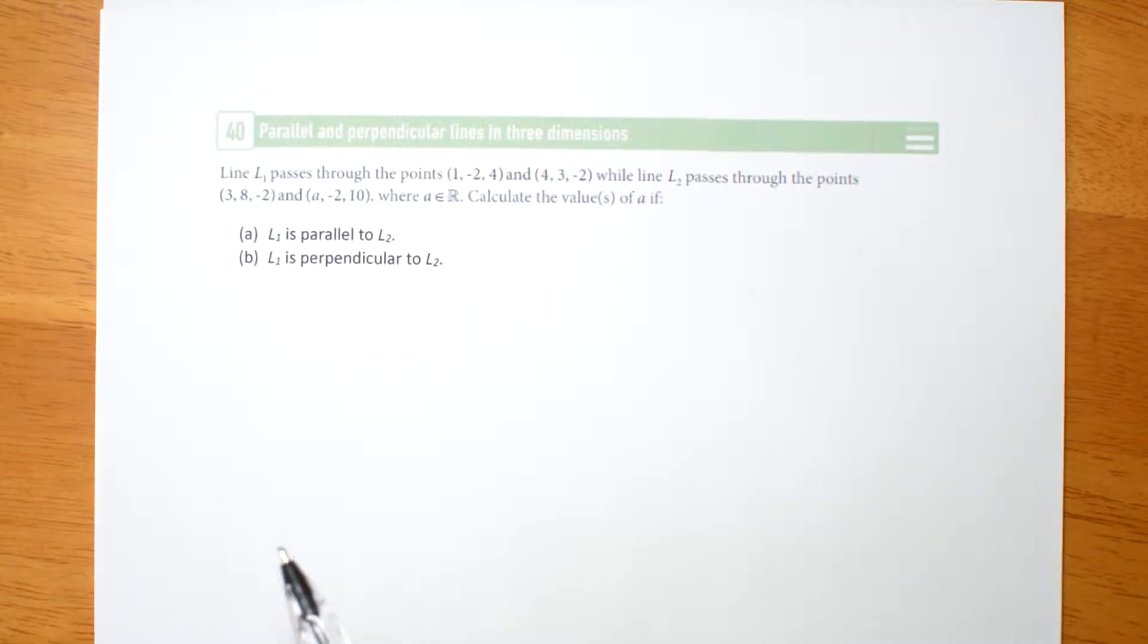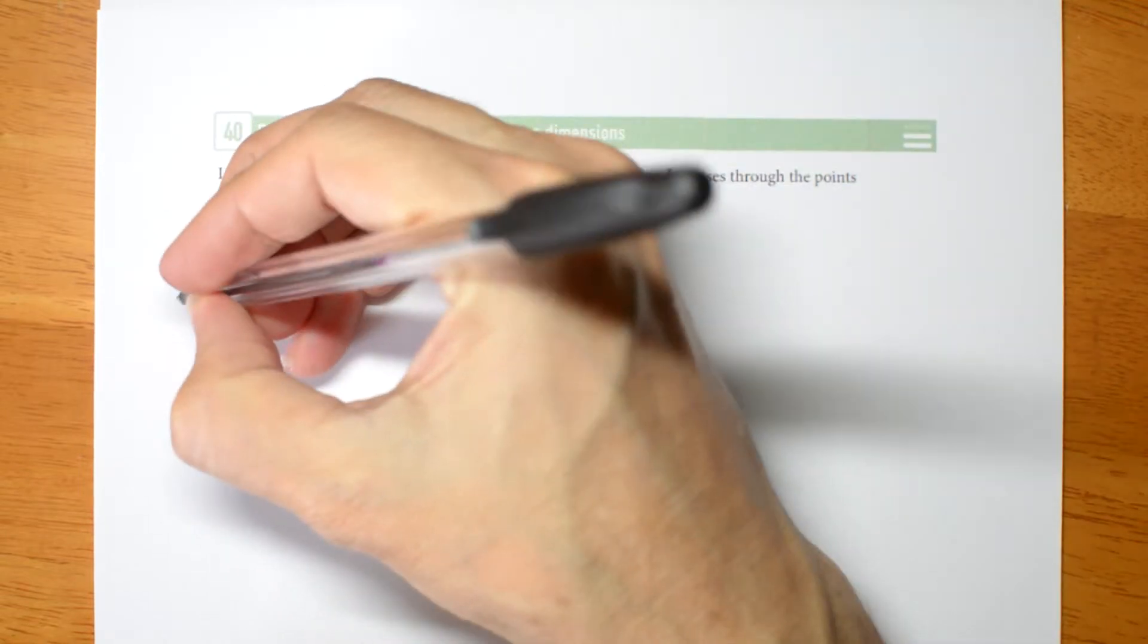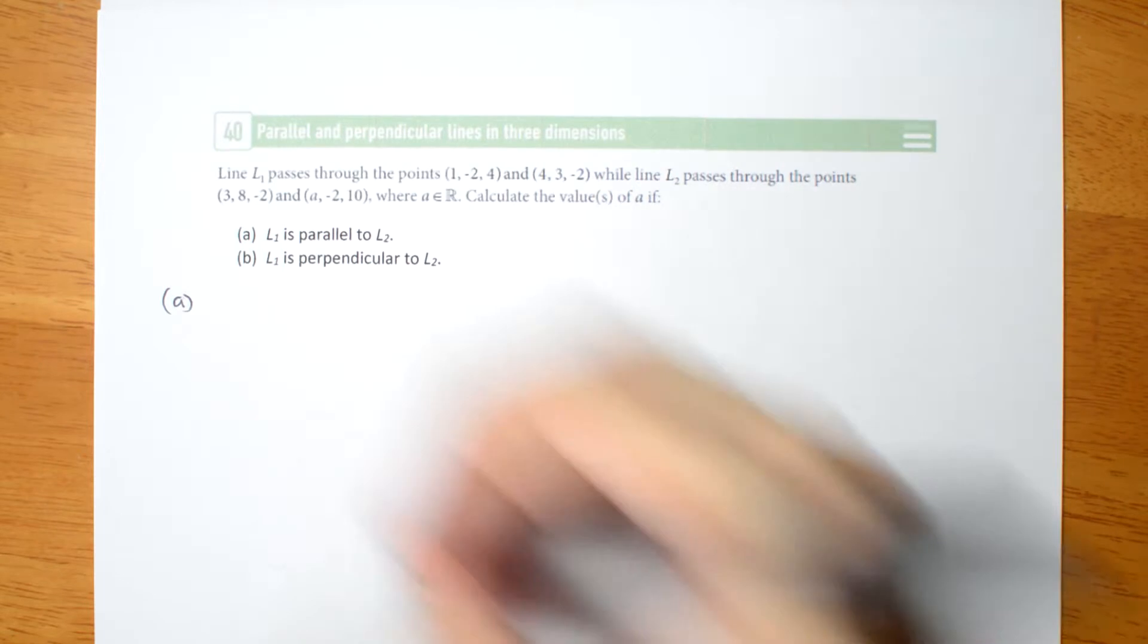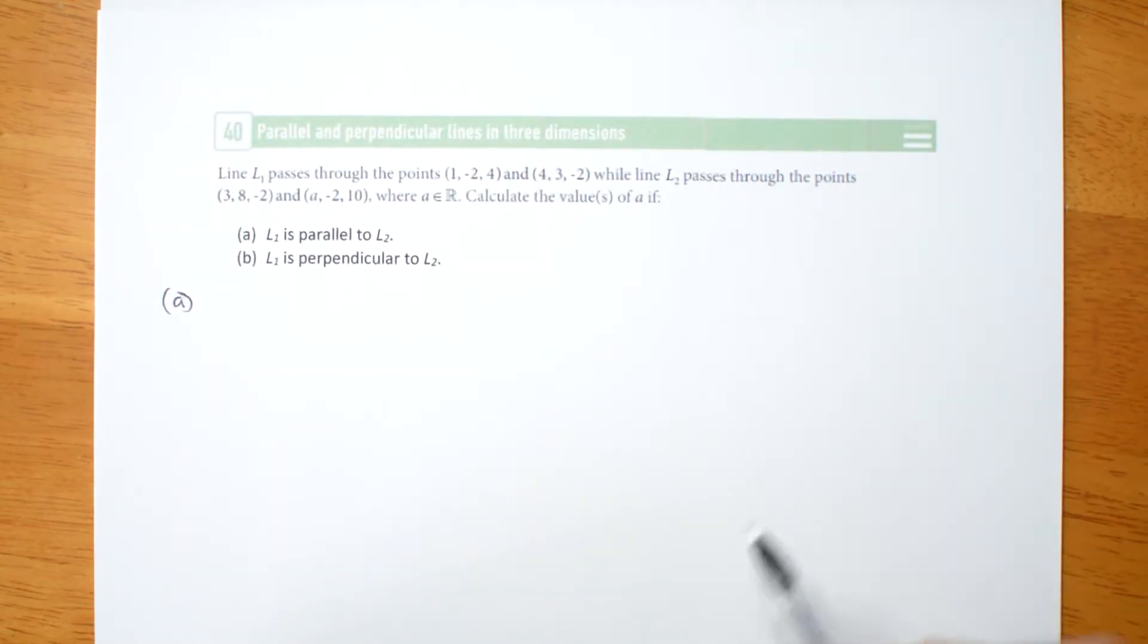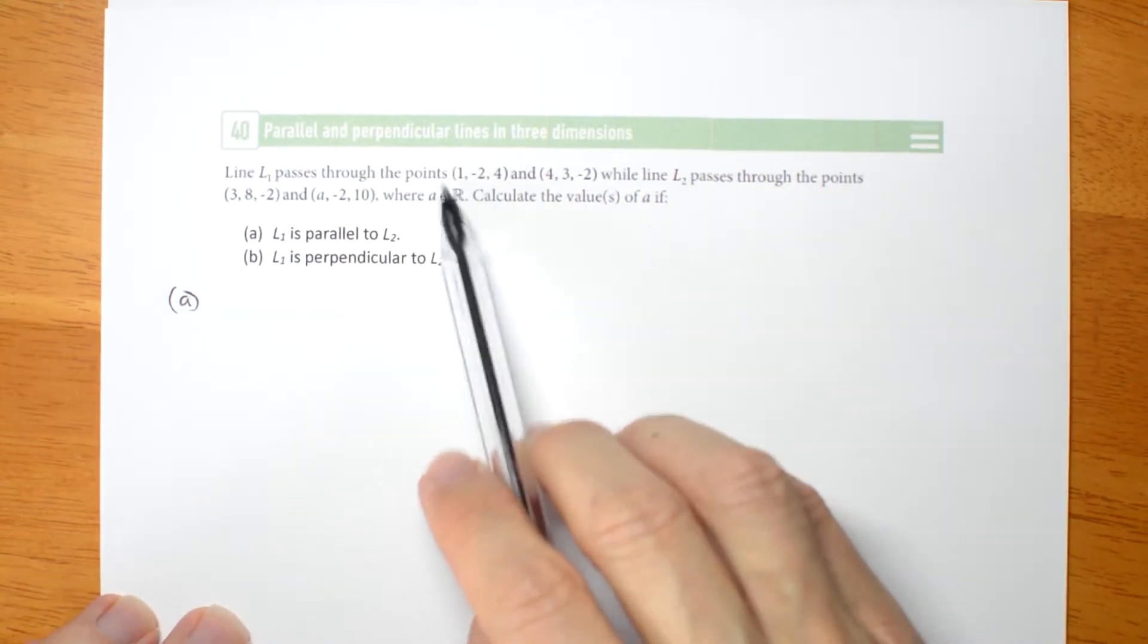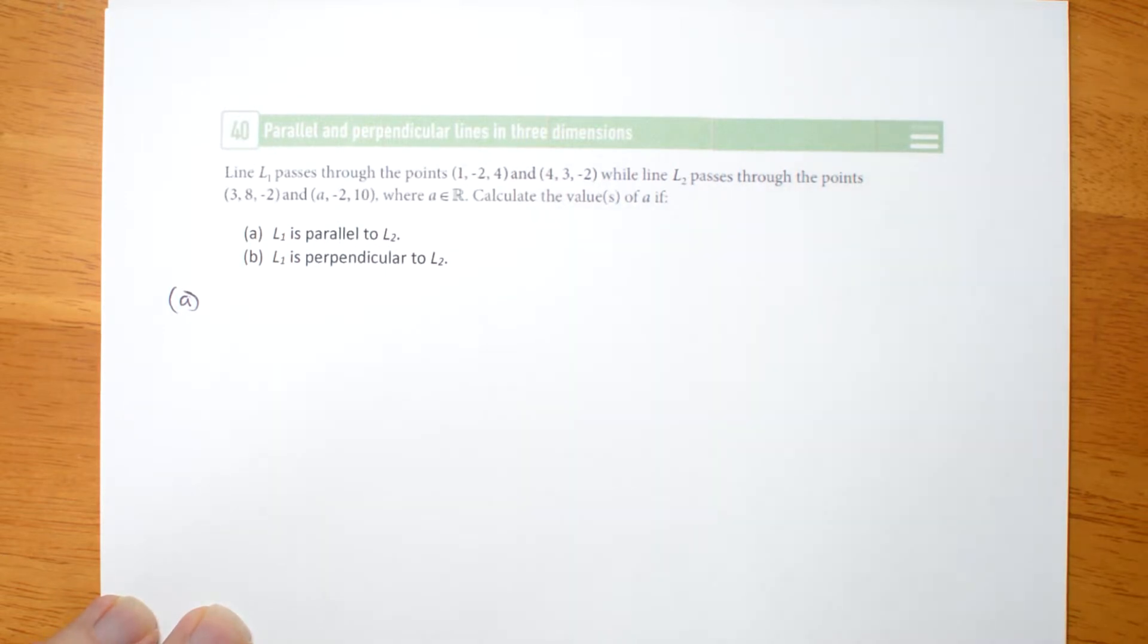Well, if they're parallel, then one is a multiple of the other, and we're talking there about the direction vectors. Let's try it. Normally I would call my direction vectors A and B. Here I'm going to call them B and C, and the reason I'm going to call them B and C is because I've got an A in here. So I'm going to try and avoid confusion.